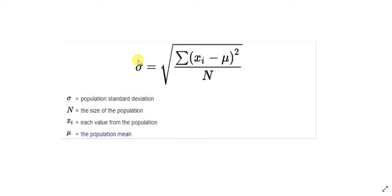Standard deviation equals the square root of the summation of every value minus its mean, squared, for all values of your population, divided by n, which is the number of values in your population or sample. There is a minor difference: for a sample you use n minus 1, and for a population you use n.